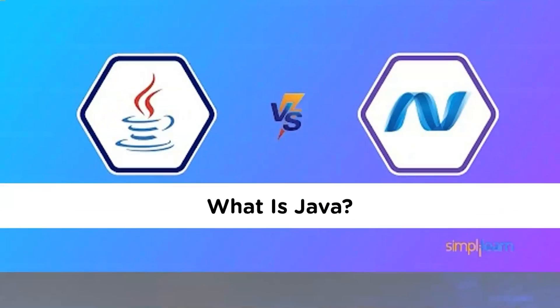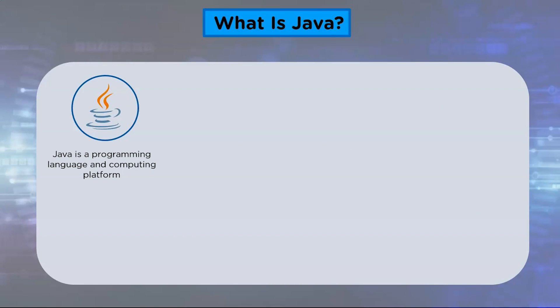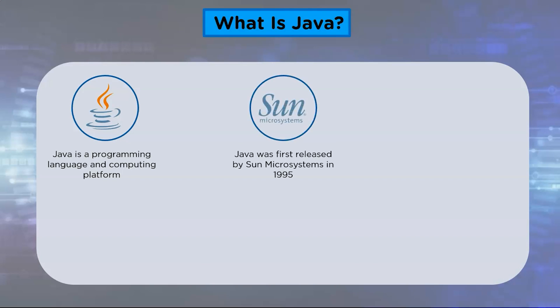What is Java? Java is a programming language and computing platform. There are lots of applications and websites that will not work unless you have Java installed. Java was first released by Sun Microsystems in 1995, and the Oracle Corporation later acquired it. Java software platform runs on billions of devices, including notebook computers, mobile devices, gaming consoles, medical devices, and many others.